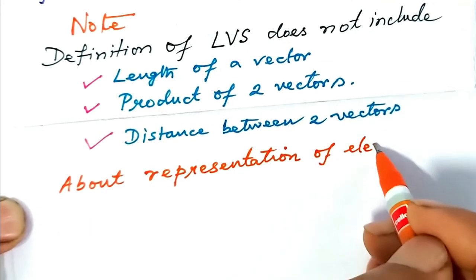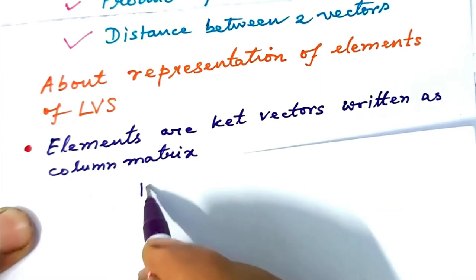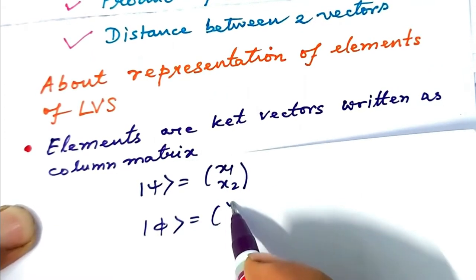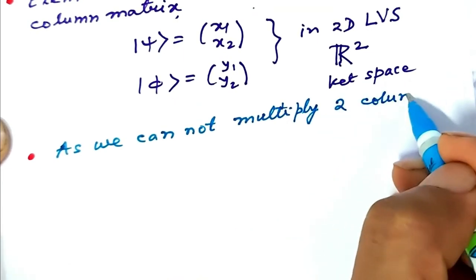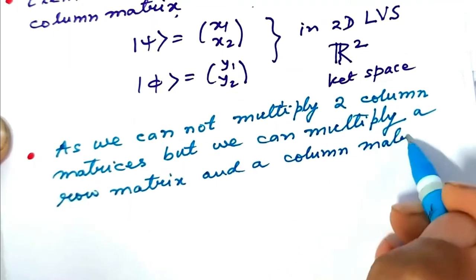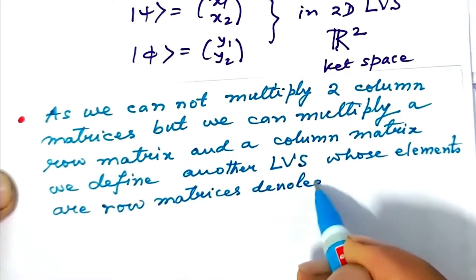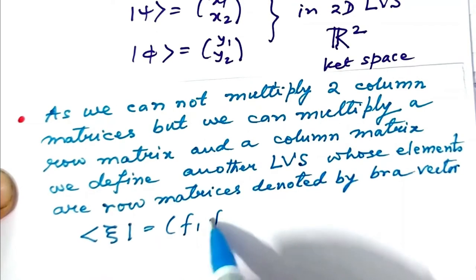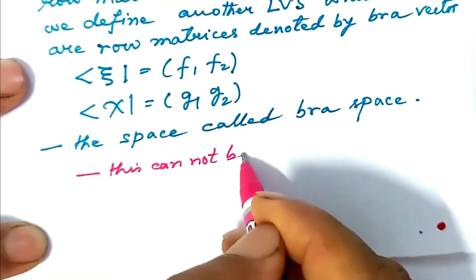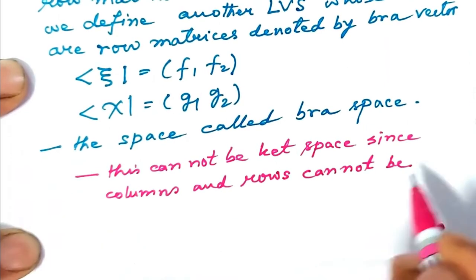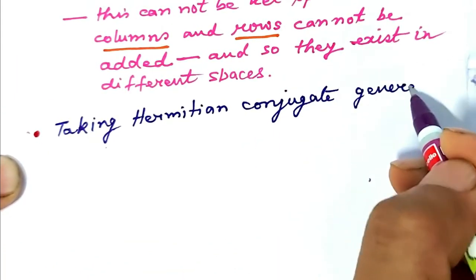A few words about representation of elements of a linear vector space. Elements are ket vectors written as column matrices: ket-psi = column (x1, x2), ket-phi = column (y1, y2) in a 2D linear vector space R2. Since we cannot multiply two column matrices, but we can multiply a row matrix by a column matrix, we define another linear vector space whose elements are row matrices — denoted by bra vectors: bra-zeta = row (f1, f2), bra-chi = row (g1, g2). This space is called bra space.